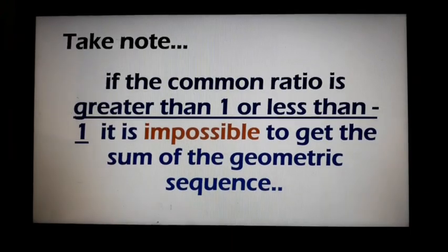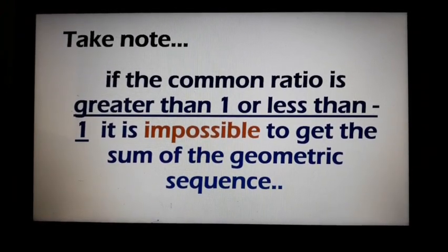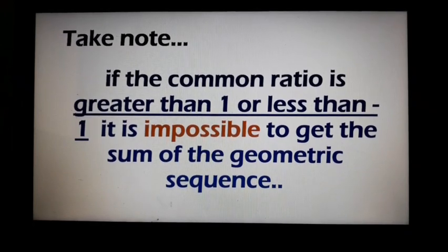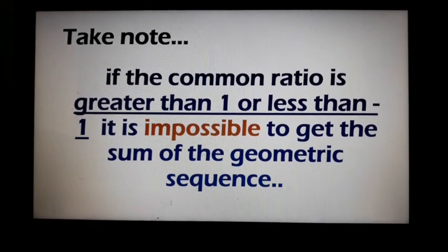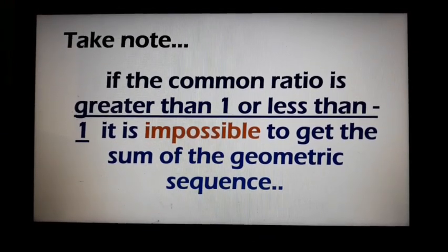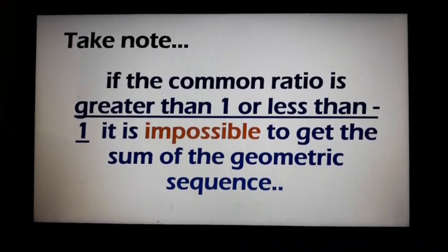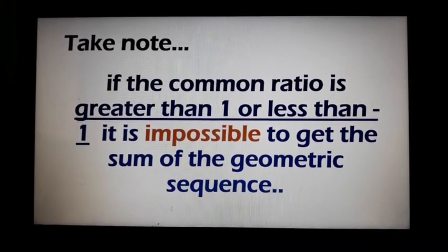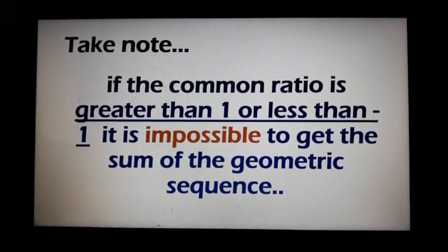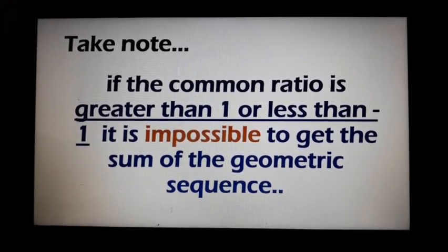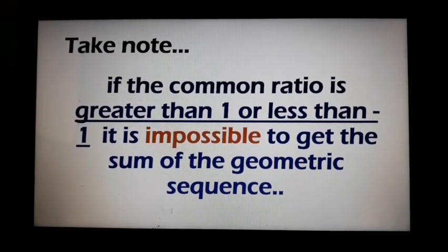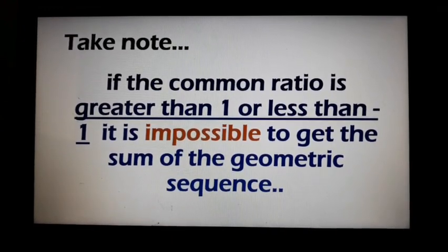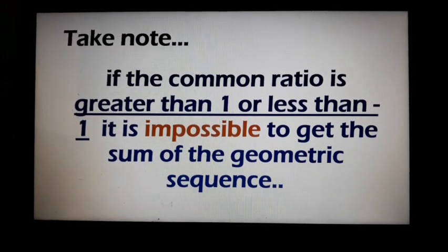Please take note of the following information. If the common ratio is greater than 1 or less than negative 1, it is impossible to get the sum of the geometric sequence. So, to give examples, if the common ratio is greater than 1 — like 2, 3, 4, 5 — or less than negative 1 — like negative 2, negative 3, negative 4 — it is impossible to get the sum of the geometric sequence.